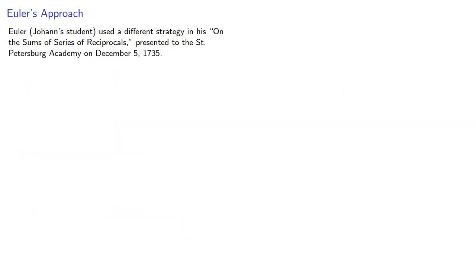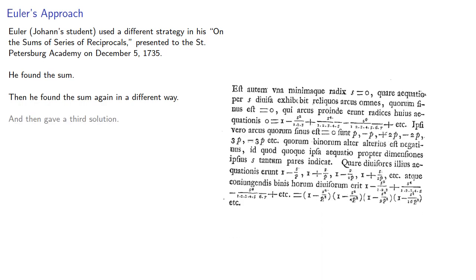Euler, who was Johann's student, used a different strategy in his On the Sums of Series of Reciprocals presented to the St. Petersburg Academy on December 5, 1735. He found the sum, then he found the sum again in a different way, and then gave a third solution.